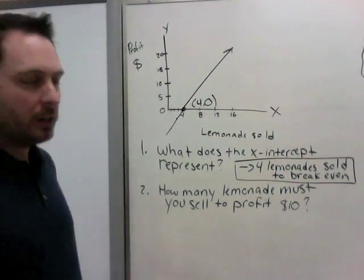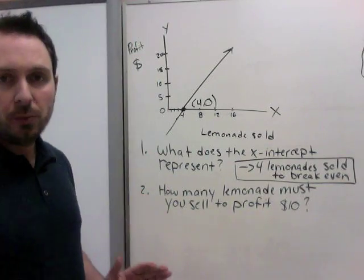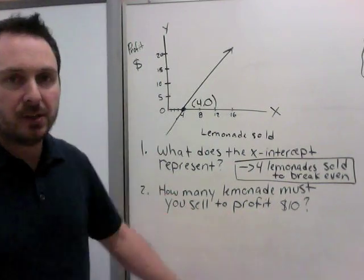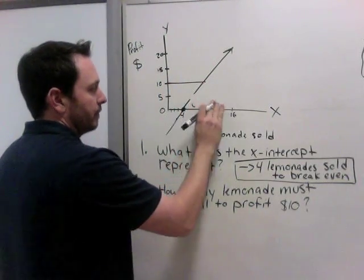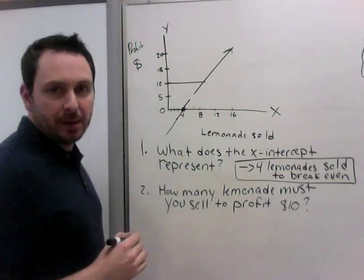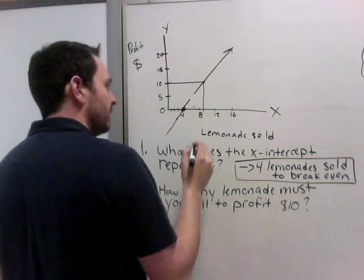Now, the next part, how many lemonades must you sell to profit $10? So the way you do this is find the profit of $10. Well, that's here. So let's draw over. Now, how many lemonades is that happening at? Well, it's connecting here. So it looks like it's, if we break this into more chunks, $10 profit is happening at 9 lemonades.